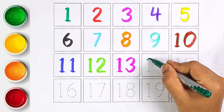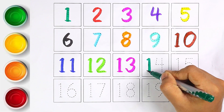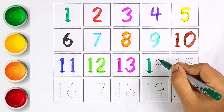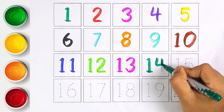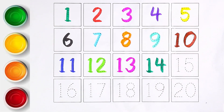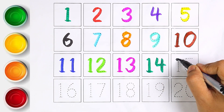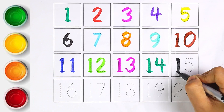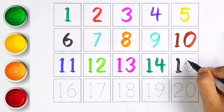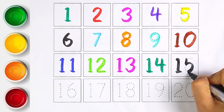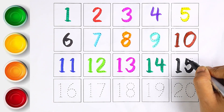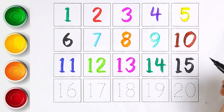Dark green color — number fourteen. Dark green color — number fifteen. Next number is fifteen. I am using black color to write number fifteen. One and five makes the number fifteen.